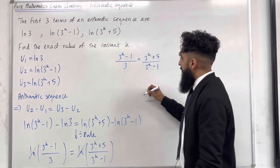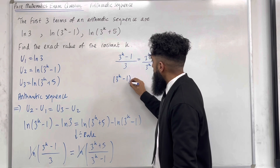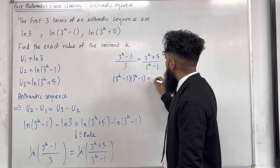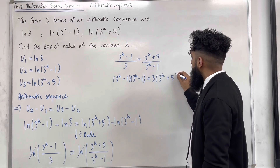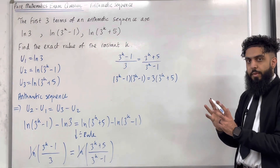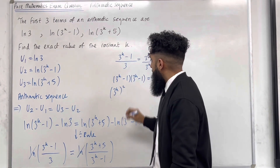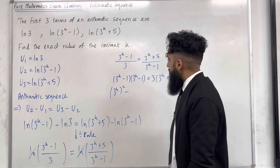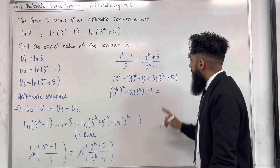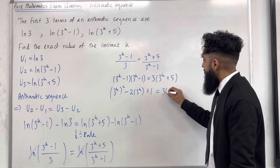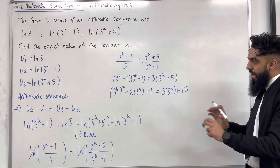I can cross multiply. This gives (3 to the power k minus 1) multiplied by (3 to the power k minus 1) equals 3 lots of (3 to the power k plus 5). Expanding the left side: (3 to the power k) squared minus 2 lots of (3 to the power k) plus 1 equals 3 lots of (3 to the power k) plus 15.